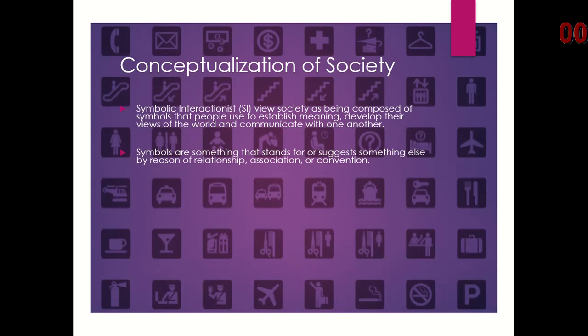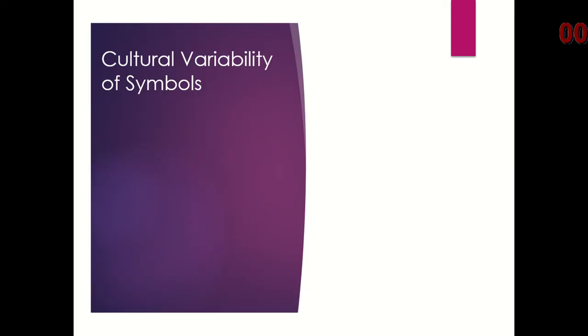The way that symbolic interactionists view society is that it's composed of symbols that people use to establish meaning, develop their views of the world, and communicate with each other. Symbols are just anything that stands for something else, either through relationship, association, or convention. They can be material objects, language, vocals, gestures, images, sounds — pretty much anything can be a symbol.